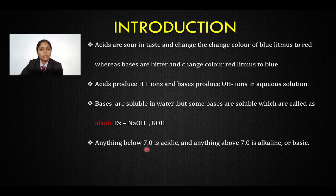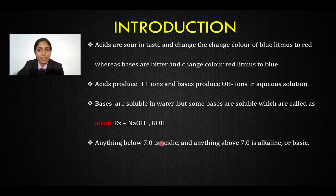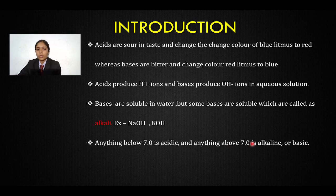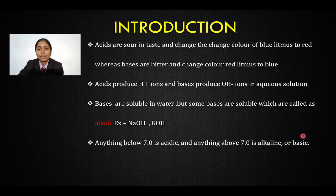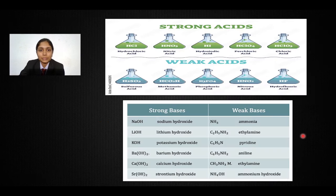Anything below 7 on the pH scale is acidic. From 0 to 7 they are acidic, and from 7 to 14 they are alkaline, or in basic terms, they are basic.